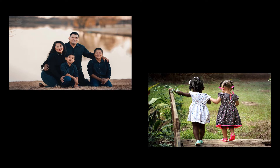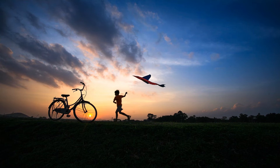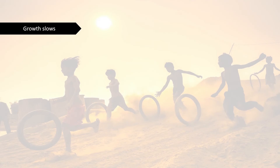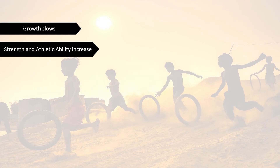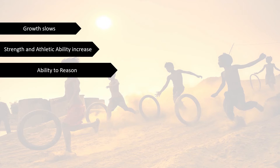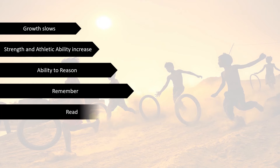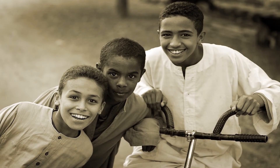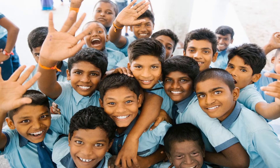The next stage is late childhood, with an approximate age of 6 to 11 years. Growth slows, but strength and athletic ability increase. Improvements occur in the ability to reason, remember, read and use arithmetic. Children advance in cognition and gain social experience. They understand themselves and think about moral issues in more complex ways. There is also expansion of the peer circle during this stage.